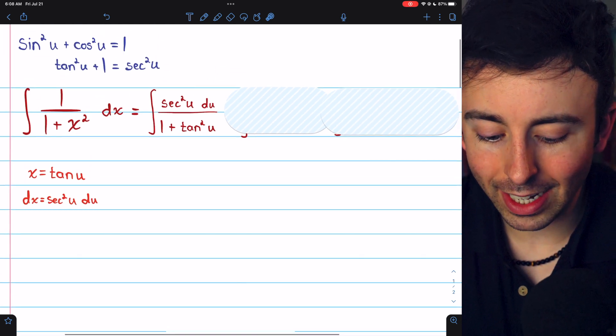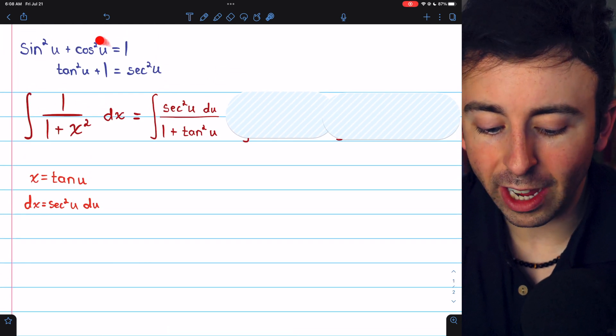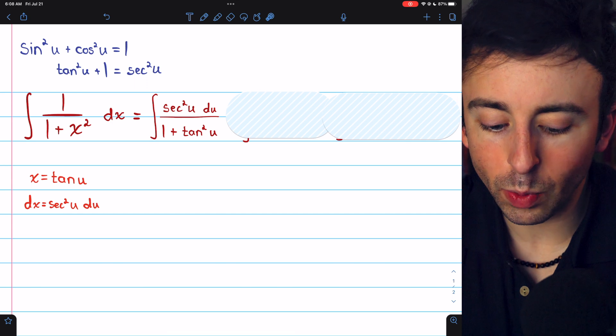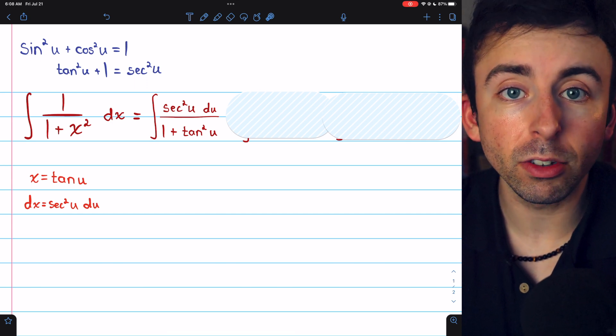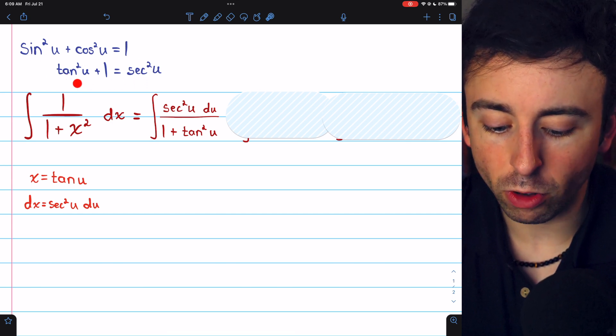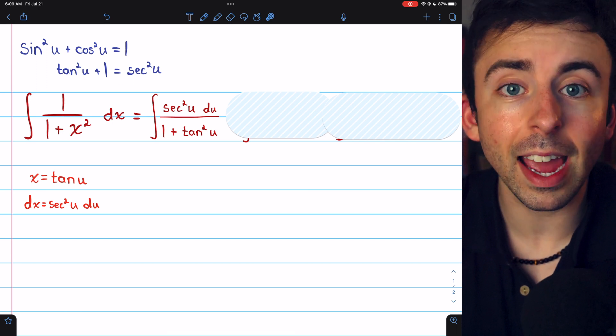Then, we can apply a trig identity. You probably remember the Pythagorean identity, which, when we divide everything by cosine squared, gives us this identity: tangent squared plus 1 equals secant squared.